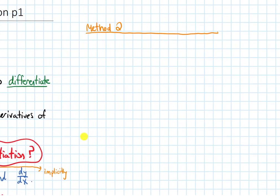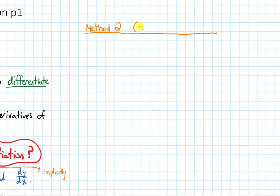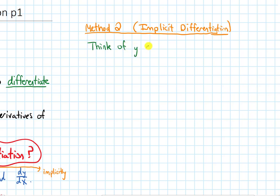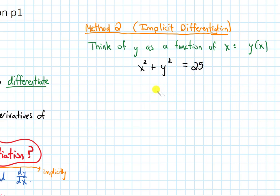Now I want to talk about another way to do this: Method 2, which is called implicit differentiation — the topic for this section. The idea is I want to think of y as a function of x, even though I don't have it isolated. I'll write y of x. So instead of x squared plus y squared equals 25, I'm going to write x squared plus y of x, that quantity squared, equals 25.